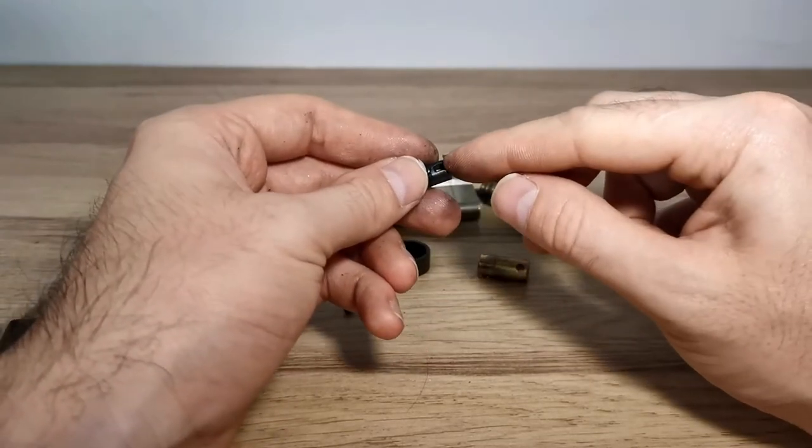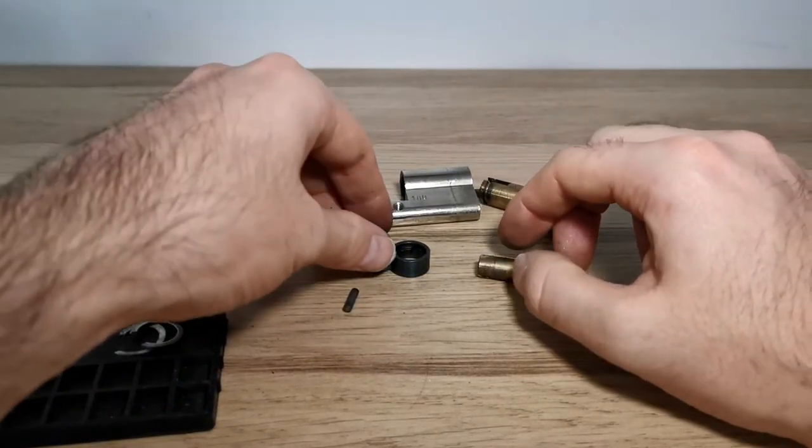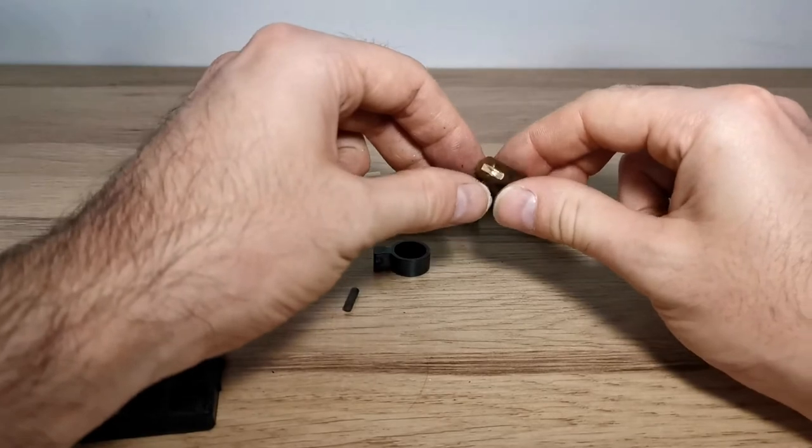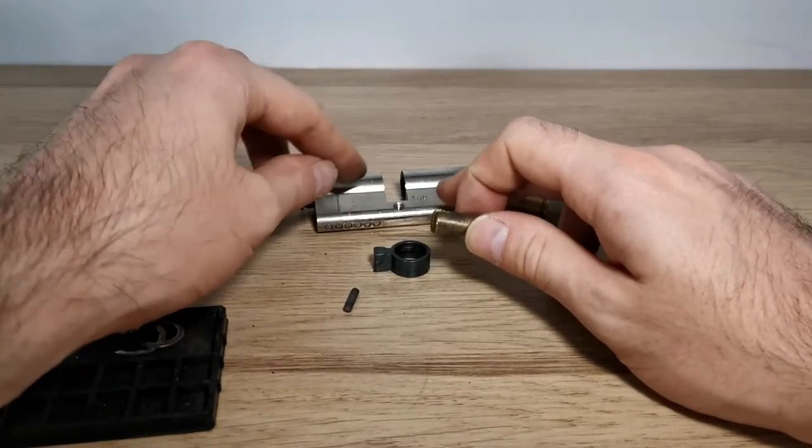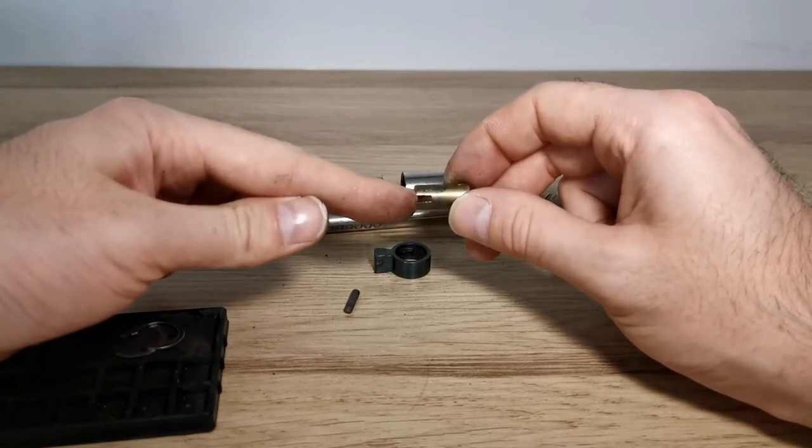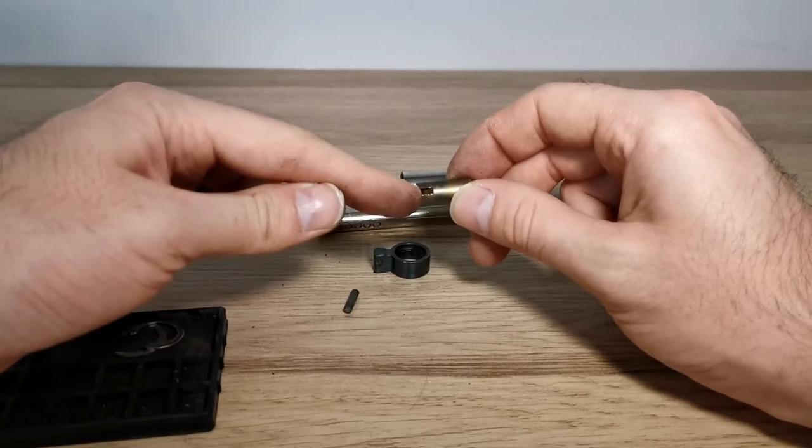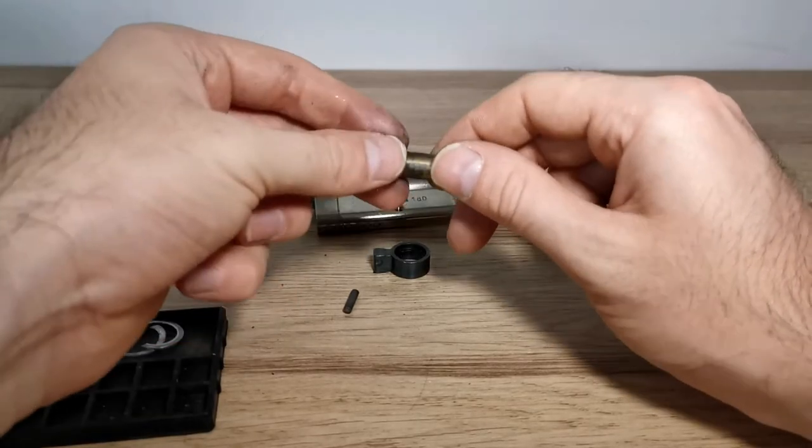But they all have this notch on here for your key to enter into. So once all your pins are lined up and your key's in the right place, your key will automatically be pushed to the back of the barrel when you started. And now it's enabled to turn. It can turn this around.